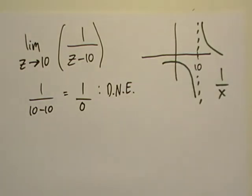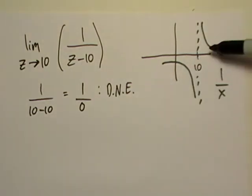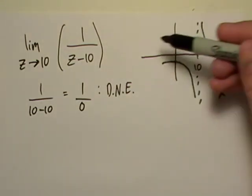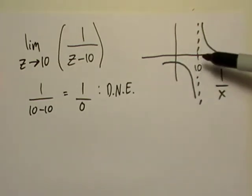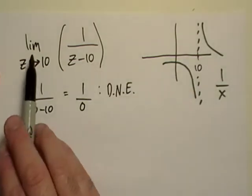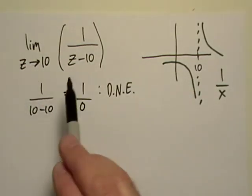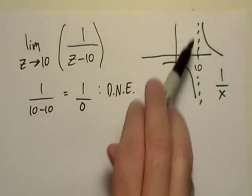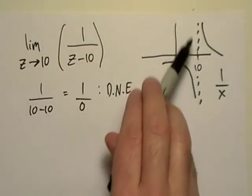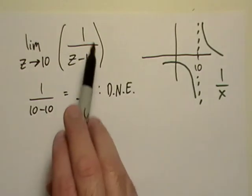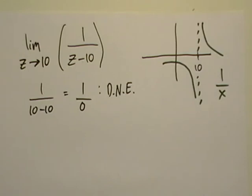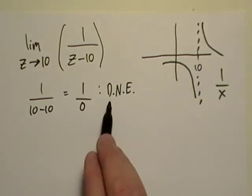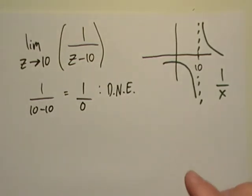So we say that the limit does not exist. It goes to infinity in this direction, and from this direction it goes to negative infinity. There's just really nothing we can say about it. And furthermore, remember, this is the first step in looking at the rate of change of a function. So what rate of change does this function have right here? This 1 over z minus 10. It's called a vertical asymptote. So there is no rate of change there. So it would make sense that the limit doesn't exist there.